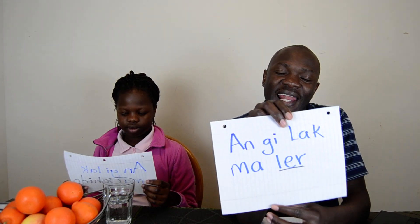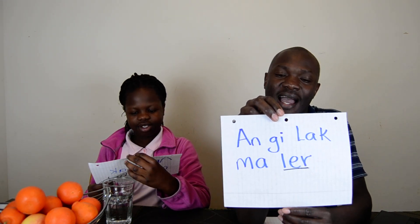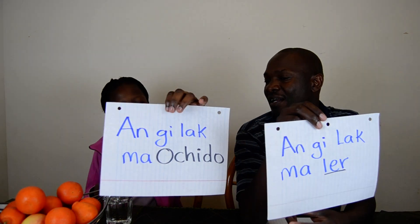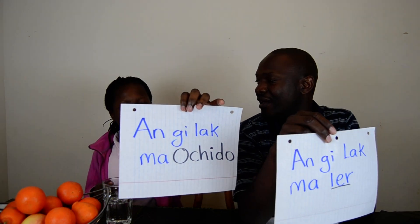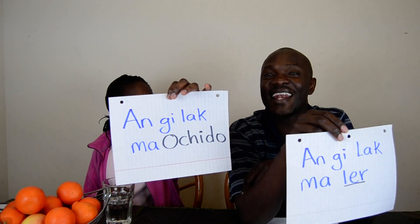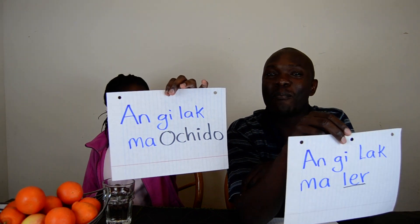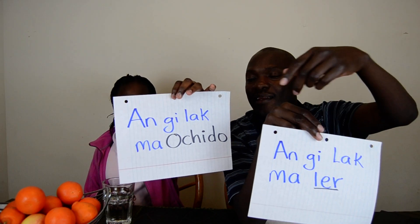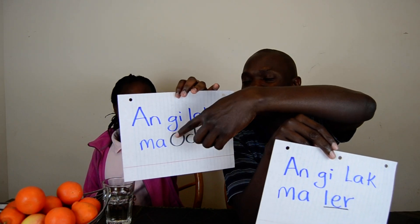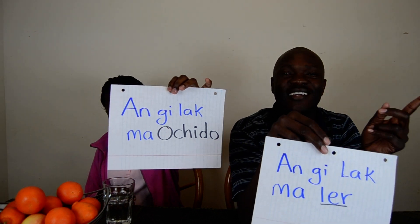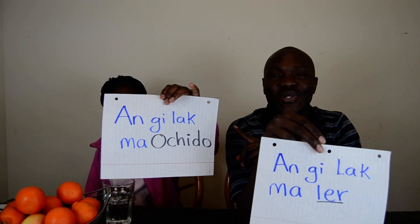Angilaq maler. I have clean teeth. Angilaq maler — clean. Angilaq maochiido — dirty. So ler means clean and tido means dirty. Clean is ler, dirty is tido.